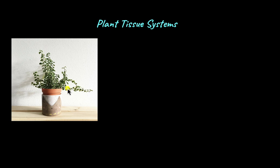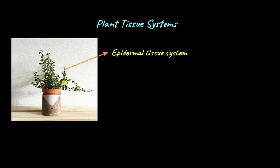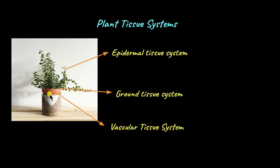We know that tissues are made up of cells of the same type performing a specific function. They might not look like they have a lot of tissues, but the plant body is made up of millions of cells organized into different types of tissues. Plant tissue systems can be mainly categorized into three categories: the epidermal tissue system, ground tissue system, and the vascular tissue system.